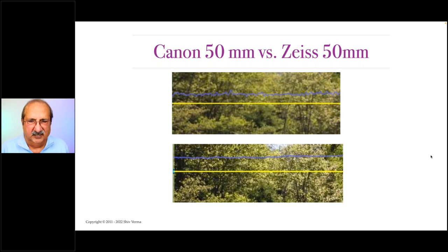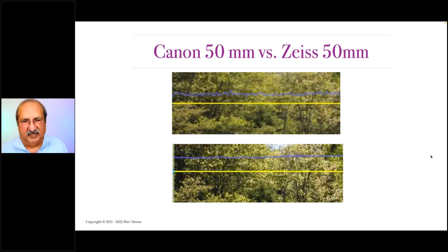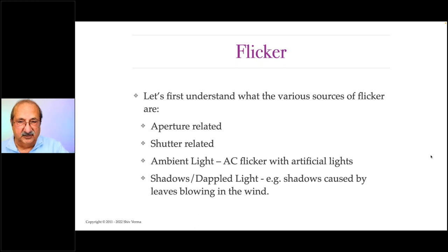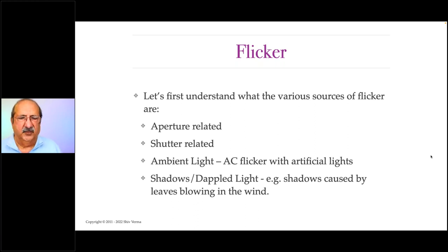I need to add a third sequence using a manual lens with a mirrorless camera. In mirrorless cameras, using the electronic shutter, there isn't much shutter variation — the exposure variation is minuscule, barely perceptible. So we have aperture-related flicker, shutter-related flicker, and flicker because of ambient light. If using AC lights like fluorescents or incandescent lights that are AC, they will flicker at 60 hertz — that's just the nature of the beast. Outside, you've got shadows and dappled light that also cause flicker. You have to figure out ways to best control flicker.